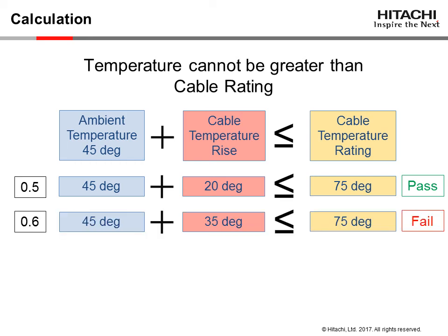Next, 0.6 amps are applied to the same cable, resulting in a 35 degree temperature rise. This, plus the 45 degree ambient temperature, exceeds the 75 degree maximum operating temperature, and results in a failure.